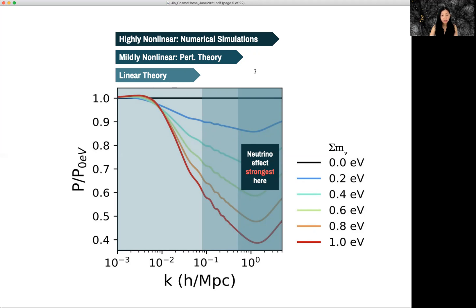But on very small scales, galactic scales, everything is highly non-linear and the numerical simulations is the only way to model neutrino effect or non-linear growth.